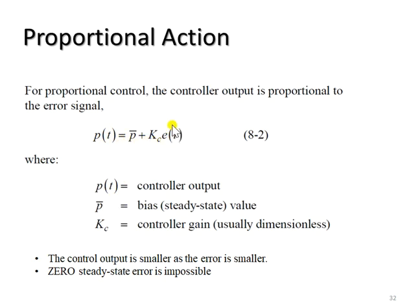on the error and also Kc, which is the proportional controller gain. So this is typical proportional control action. We can see that if the gain is increased or the error is increased, the proportional control output will also be increased on top of the previous control action.